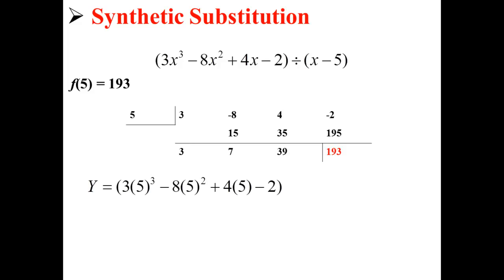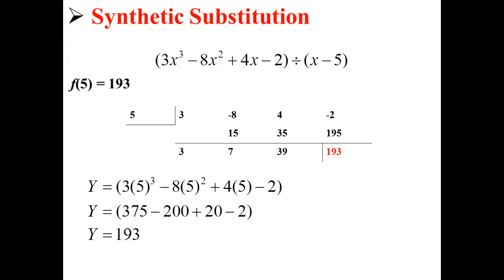Let's check that. Here, we plug 5 into our equation. So we have y is equal to 3 times 5 cubed minus 8 times 5 squared plus 4 times 5 minus 2. This simplifies to 375 minus 200 plus 20 minus 2, and finally simplifies to y equals 193. So the remainder theorem was correct — f of 5 is equal to our remainder, 193.